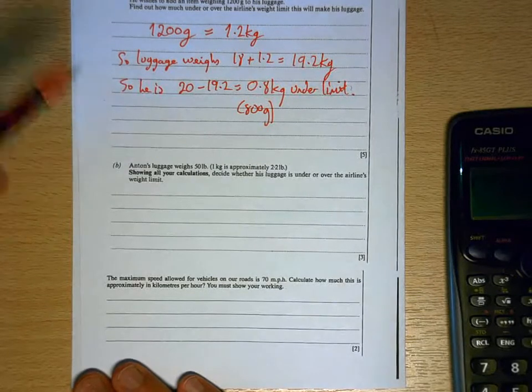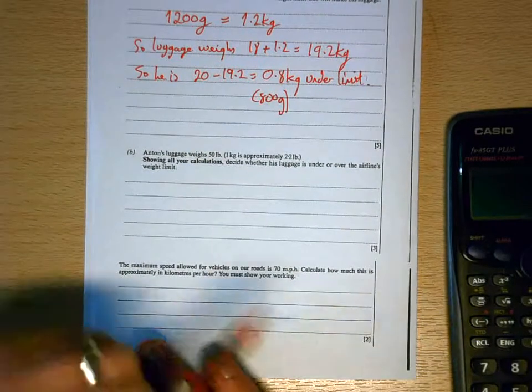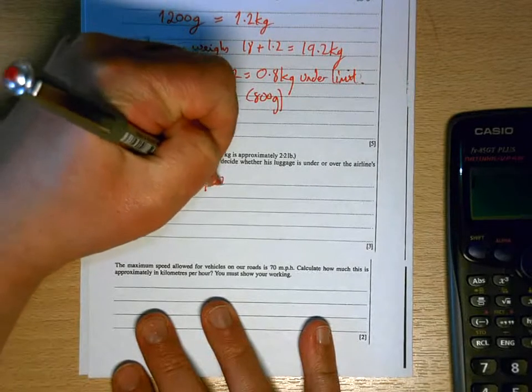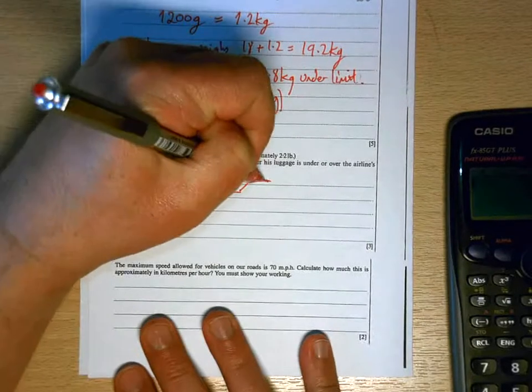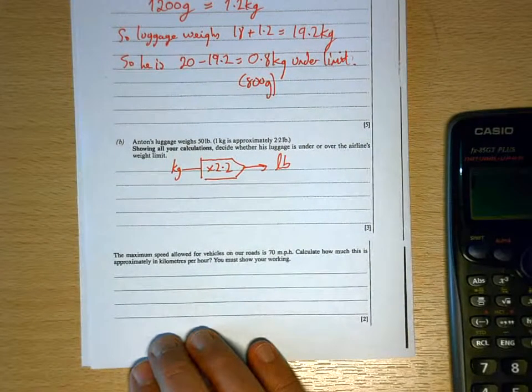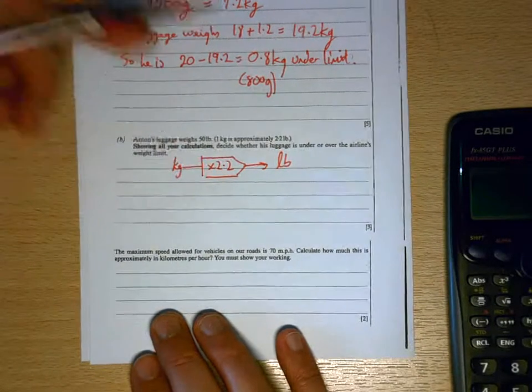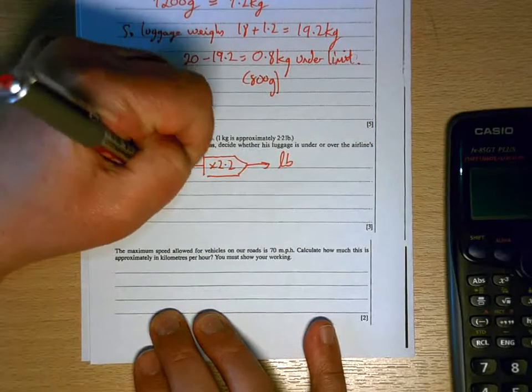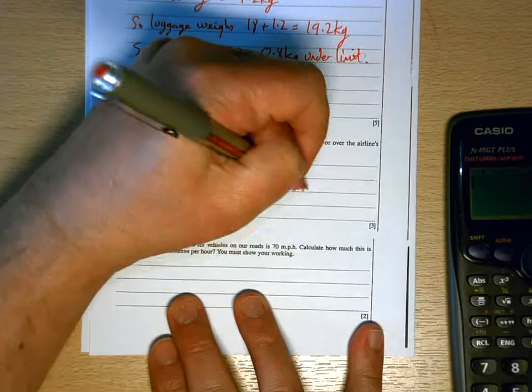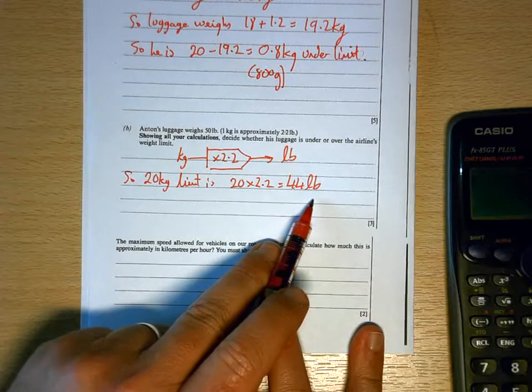lb is short for pounds. So it's helping us here, it's telling us that one kilogram is approximately 2.2 pounds. So just like exchange rates, if you can work on exchange rates, we can write this as a number machine. To turn kilograms into pounds we multiply by 2.2. So in order to make this comparison, what I need to do is take that 20 kilogram limit and turn it into pounds, which is 44 pounds.